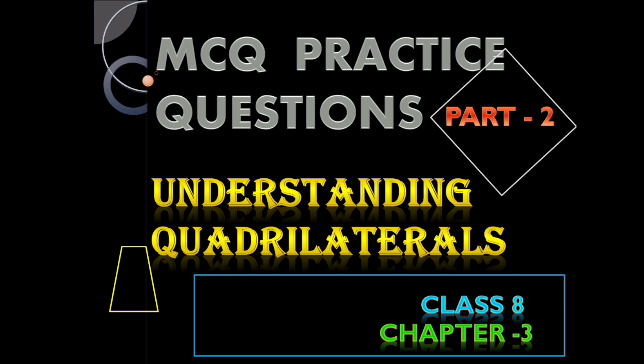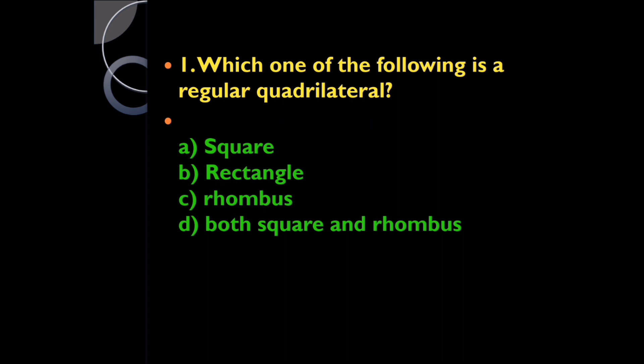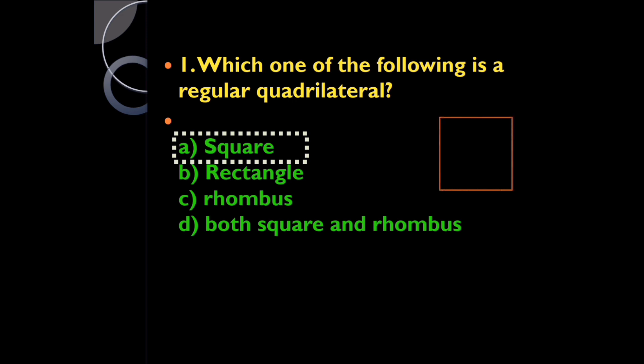Question one: which of the following is a regular quadrilateral — square, rectangle, rhombus, or both square and rhombus? It is a square, because a square is a quadrilateral whose four sides are all equal and each angle is 90 degrees. To be a regular polygon, all sides must be equal and all angles must be equal.